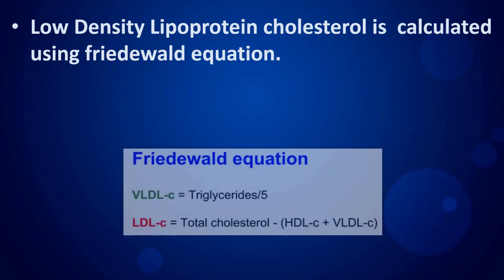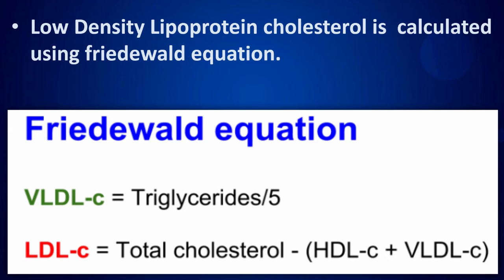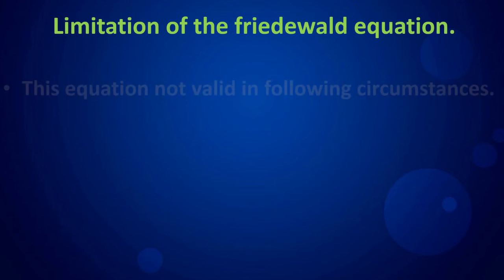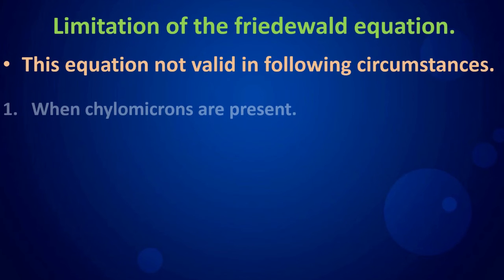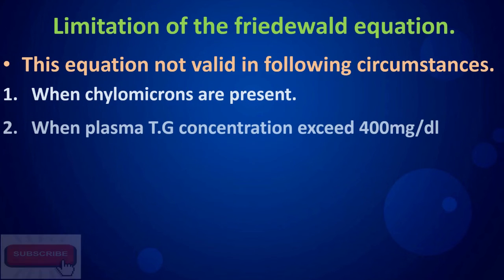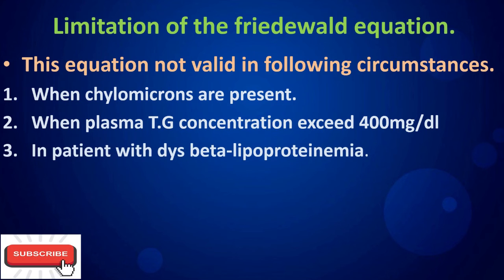Low-density lipoprotein cholesterol is calculated using the Friedewald equation. Limitations of this equation include: it is not valid when chylomicrons are present, when plasma triglyceride concentration exceeds 400 milligrams per deciliter, or in patients with dysbetalipoproteinemia.